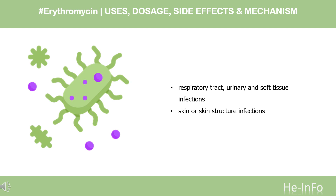Mild to moderate skin or skin structure infections caused by Streptococcus pyogenes or Staphylococcus may be treated with erythromycin. However, resistant staphylococcal organisms may emerge. Intestinal amoebiasis caused by Entamoeba histolytica can be treated with oral erythromycin. Extraenteric amoebiasis warrants treatment with other antimicrobial drugs.